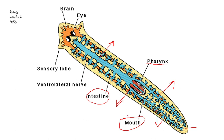In addition to the main intestine branches, there are also further small branches of the intestine present. These small branches end blindly — they are further closed — and these branches are called caeca.